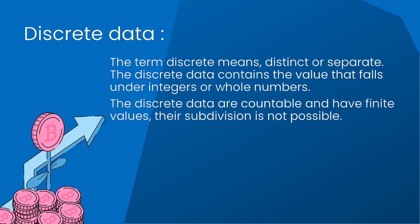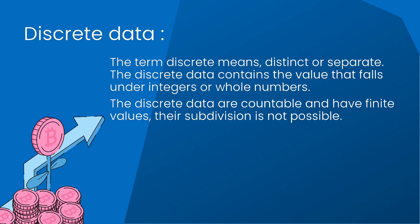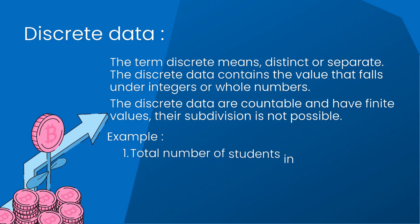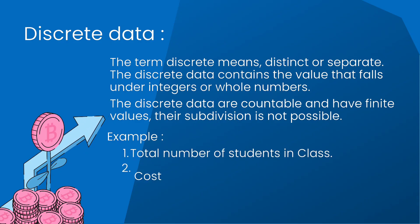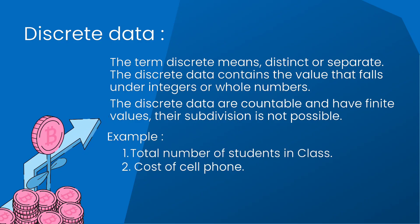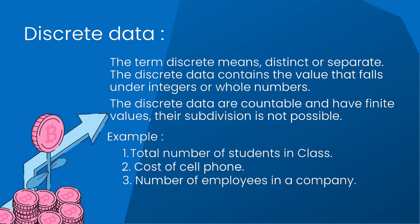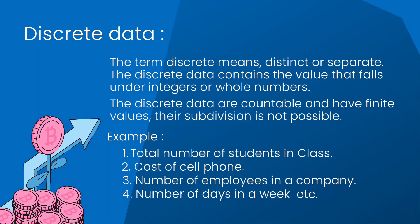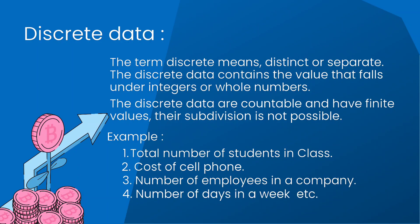Continuous data can be in the form of fraction numbers. It represents information that can be divided into smaller levels, and can take any value within a range. Height of a person, Wi-Fi frequency, and speed of a vehicle are some examples of continuous data.